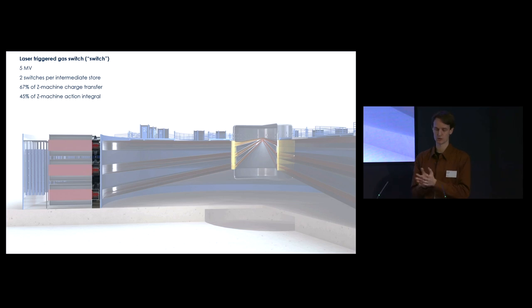Keeping the switch within safe operating parameters has led to the intermediate store being oversized in terms of capacitance. We're looking at total charge transferred by the switch at 67% of the Z machine, and the action integral which is integral of I squared dt at 45% of the Z machine. The damage from repeated use is more proportional to the action integral. An innovation needed is having two switches per intermediate store - one works nicely because it's coaxial, but two requires figuring out the topology.